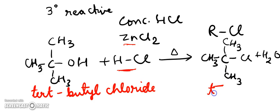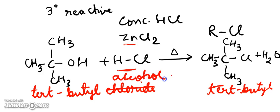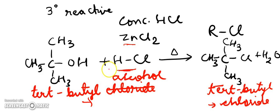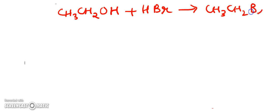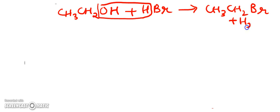So tertiary butyl alcohol is converted to tertiary butyl chloride — a haloalkane formed from an alcohol. We can also prepare bromoalkanes: if you take ethanol and react it with hydrobromic acid, you get a bromoalkane. A water molecule is generated and an alkyl bromide is formed.